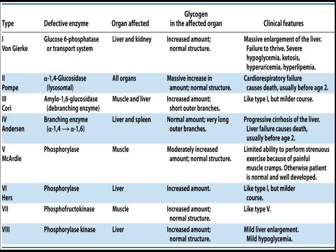Pompe disease — the defective enzyme is alpha-1,4-glucosidase, which is a lysosomal enzyme. All organs are affected with a massive increase in amount but normal structure. It affects the heart — just remember Pompe as a pump, so it affects the heart pump. You should also remember the enzyme name: alpha-1-glucosidase. I recently uploaded a video on that, you can go through it.